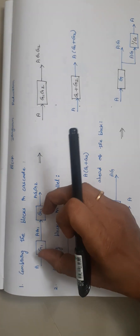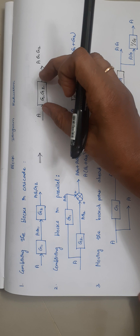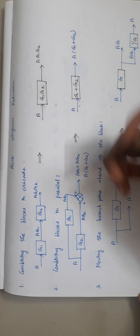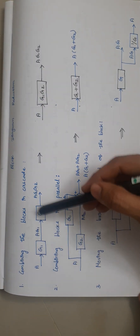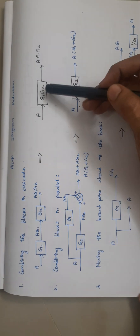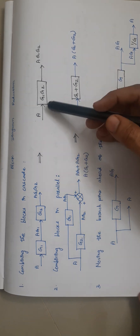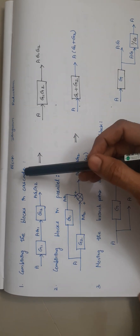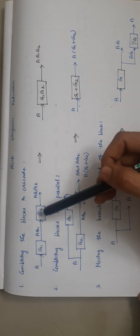Elements in series can be replaced by a single element, provided the elements in the two blocks are multiplied and written in the single block. This is the way of combining blocks in cascade or blocks in series.